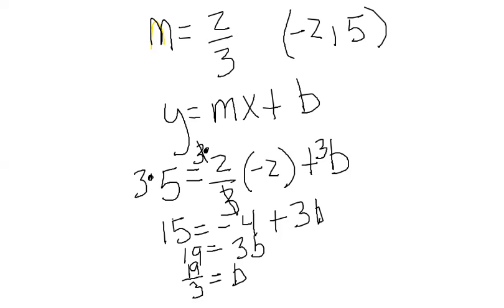So I have my new b. What will my equation be? Well, I'll write it right here. Y equals—I know my slope is 2/3 x—my y-intercept is plus 19/3.